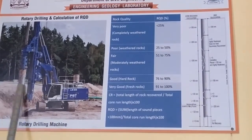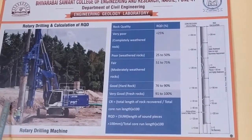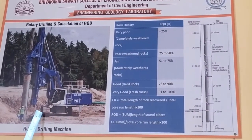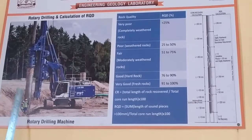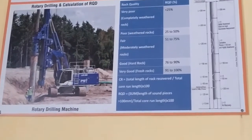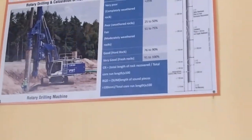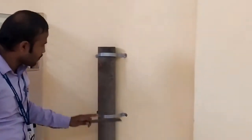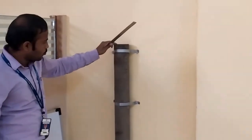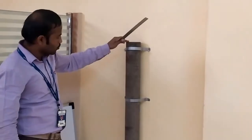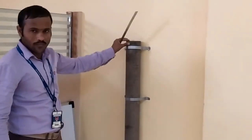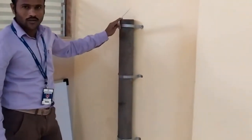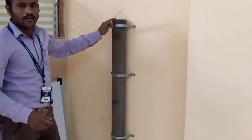For the drilling purpose, we use a rotary drilling machine. With the help of this machine, we bring up core samples from the subsurface. After that, we collect these core log samples in a wooden box, preserve them, and use them to calculate core recovery and RQD.